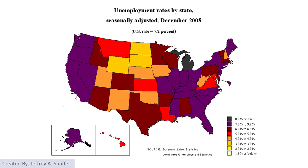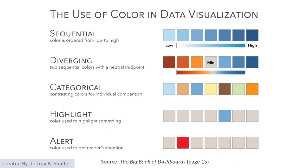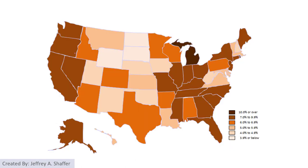The biggest problem is that they are using too many colors. If we recall what we have learned in color design, to represent quantitative data we should use either a sequential or diverging color scheme. The previous example has a lot of colors.